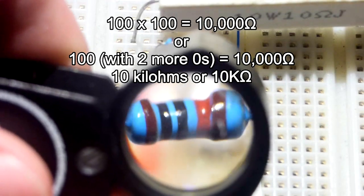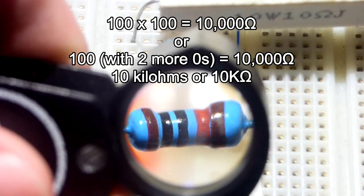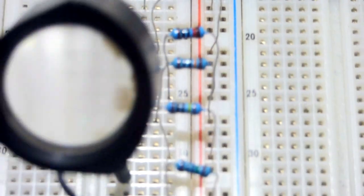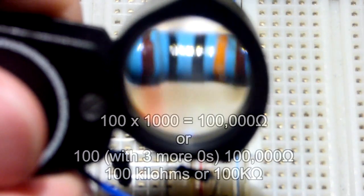So again, 10,000 ohm resistor, 1, 0, 0, and then 2 more 0s. And so red for 2, I think that will show up pretty good as red.